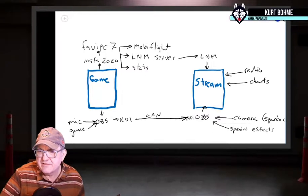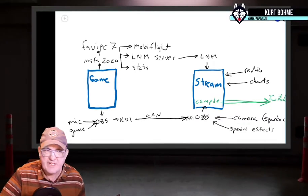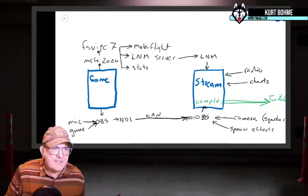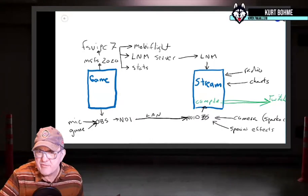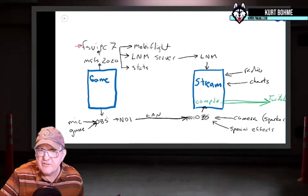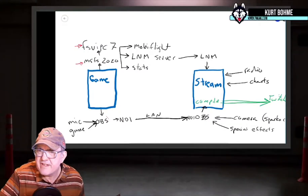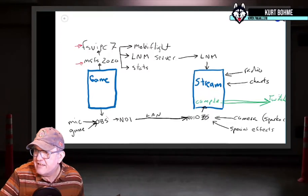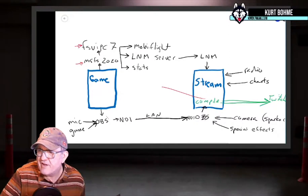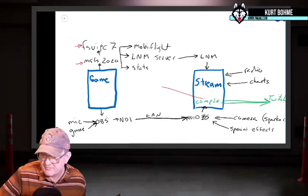The streaming computer does all the compiling and sends it out to Twitch. In terms of cost: FSUIPC7 I had to purchase, and the game obviously. OBS is free, NDI is free, MobiFlight is free, Little Nav Map is free, the stats program is free, Bush Talk Radio is free, charts are free. SparkleCAM has a charge depending on what effects you want, and all my special effects I made myself. So basically just two programs I had to purchase - everything else is free.